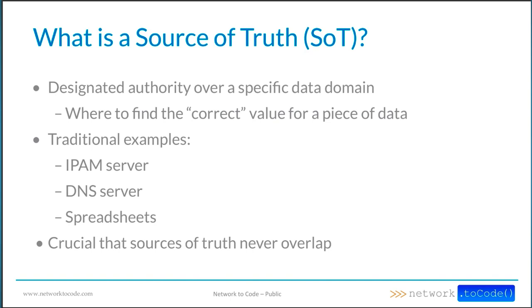For example, let's say you have two DNS servers that are both resolving the same hostname to two different IP addresses. Well, which one is right? Which one of them is authoritative for that piece of data? You may have also heard the phrase 'system of record' — it's used somewhat interchangeably with 'source of truth.' It refers more to the specific source of data, like a database for the data itself. So for our purposes here, I'm just going to be referring to everything as a source of truth.